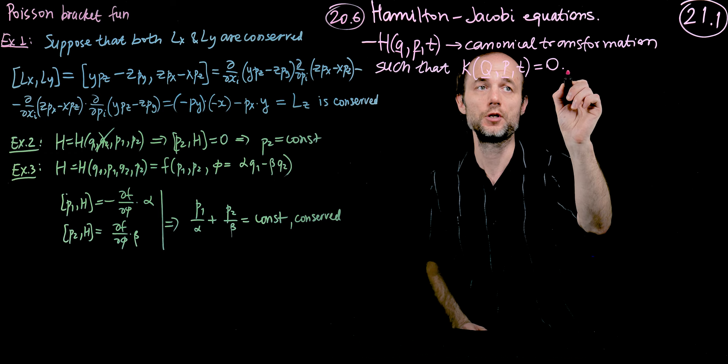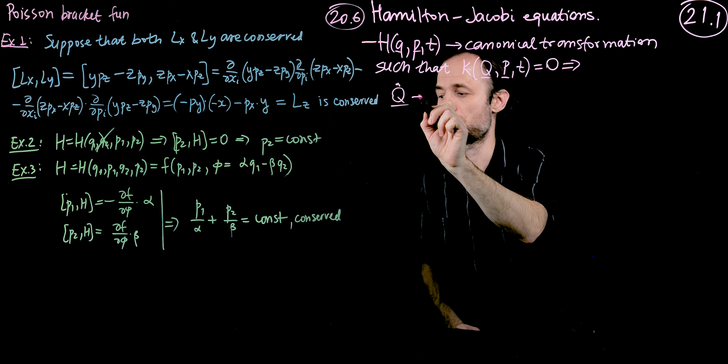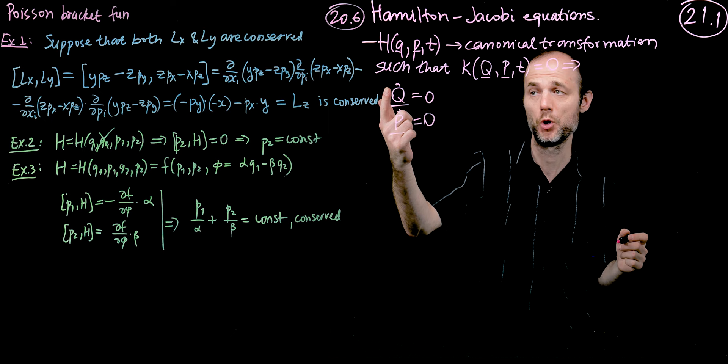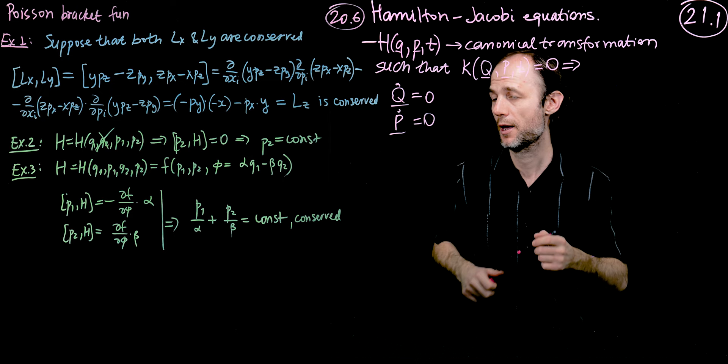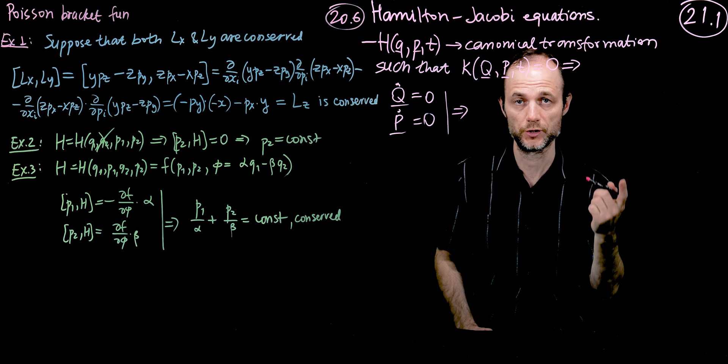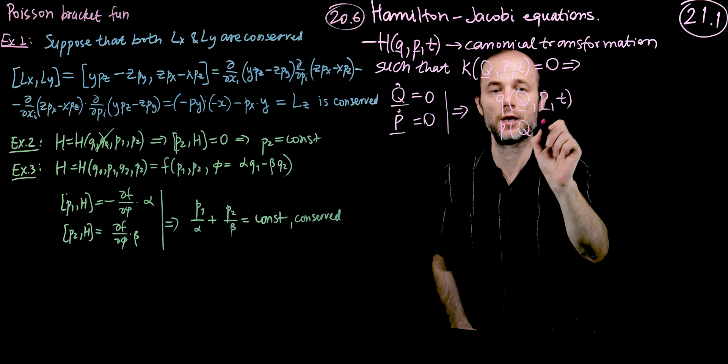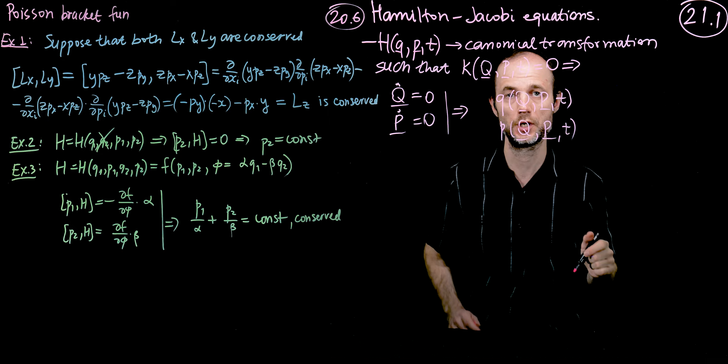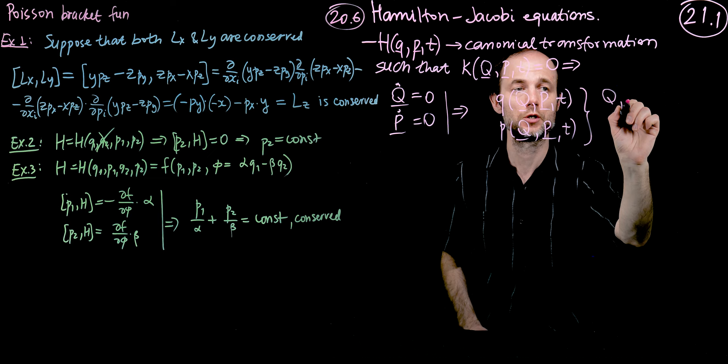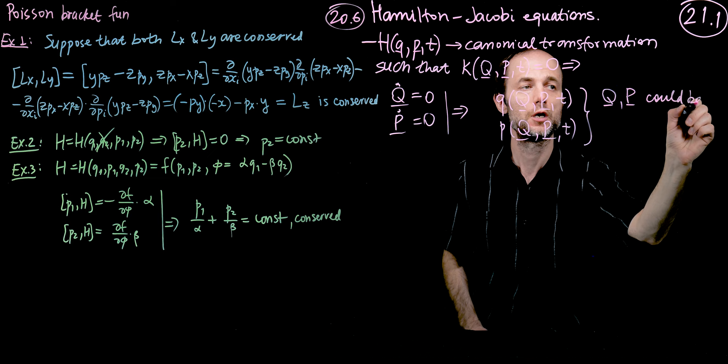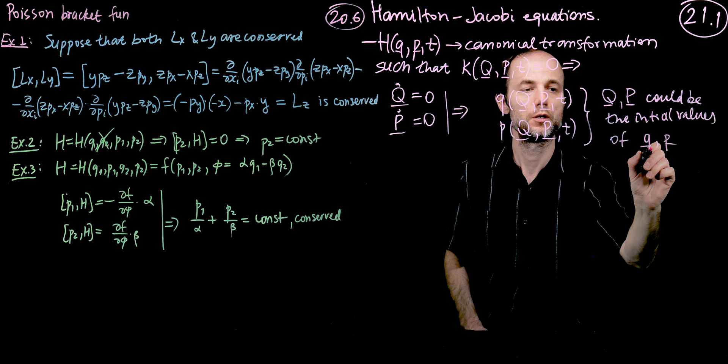So if the new Hamiltonian, the Cameltonian, vanishes, then from here we can conclude that the equations of motion in the new coordinates look like that. Both q dot and p dot are all zeros and therefore all we need to do in order to solve the system is to express q as a function of capital Q, capital P, and t and p as a function of capital Q, capital P, and t. So the old ones in terms of the new ones and the time. And what's really awesome is that capital Q, capital P, the new ones, they could be the initial values of the old coordinates q and p.